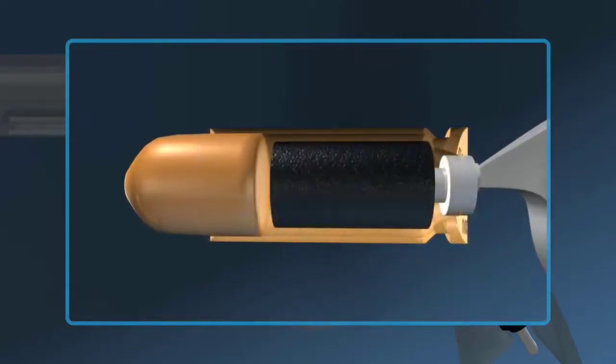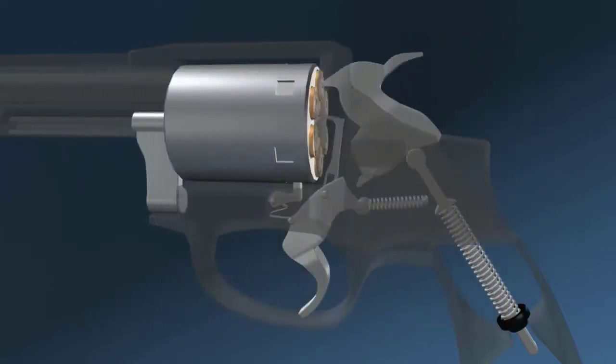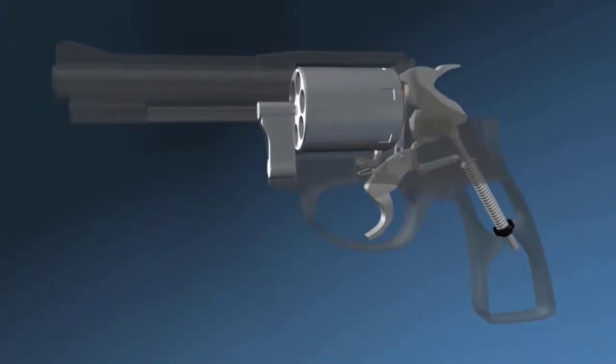The primer explodes, igniting the propellant. The propellant burns, releasing a large volume of gas, and the gas pressure drives the bullet down the barrel. The gas pressure also causes the cartridge case to expand, temporarily sealing the breach. All the expanding gas pushes forward rather than backward.